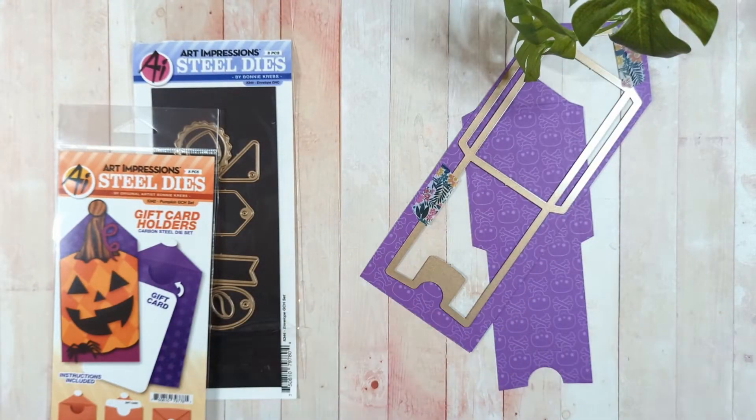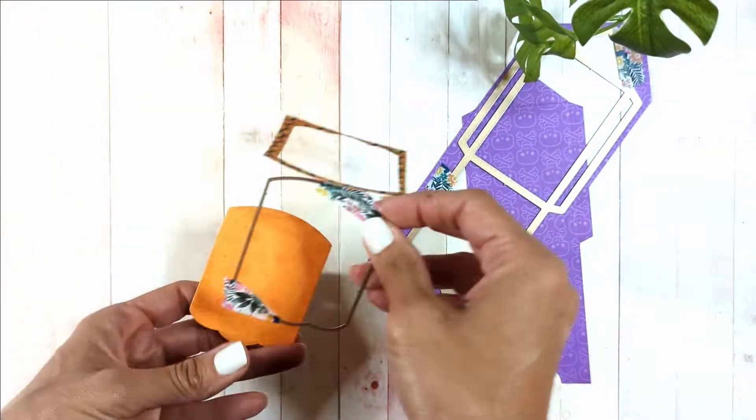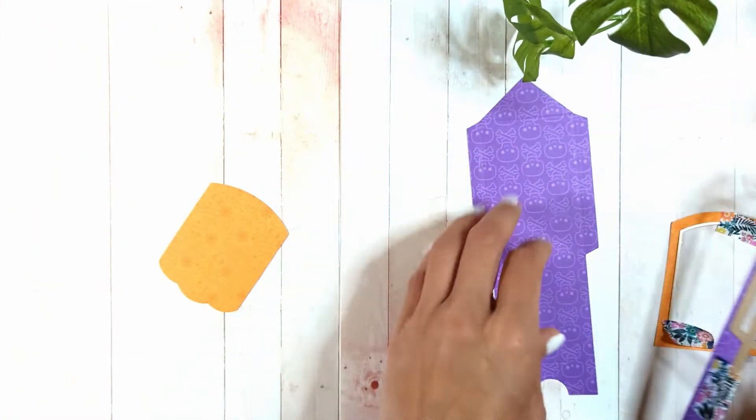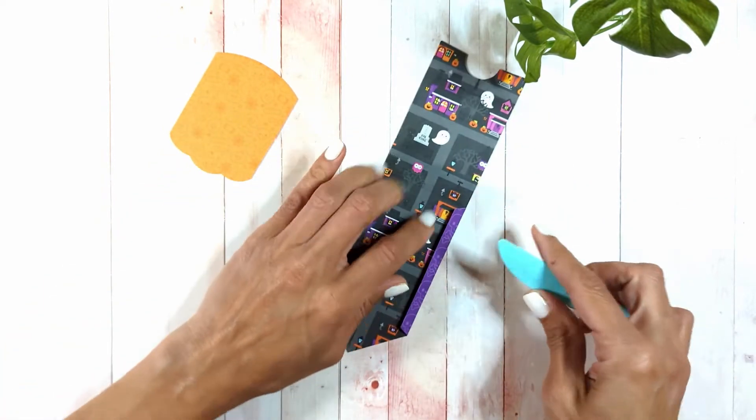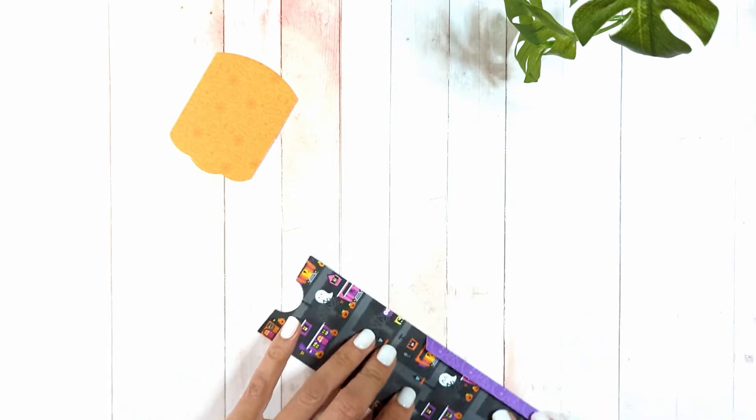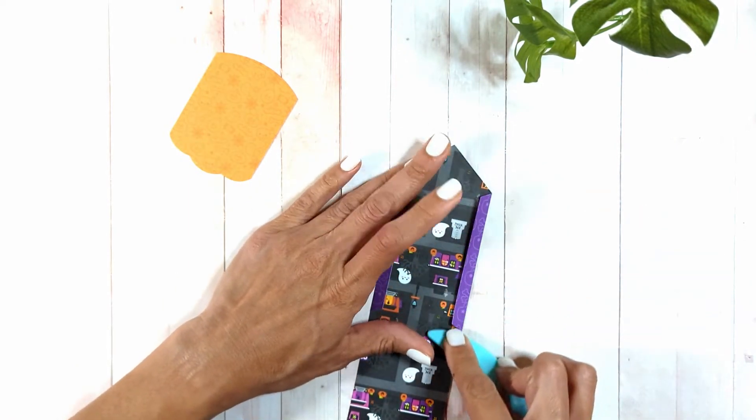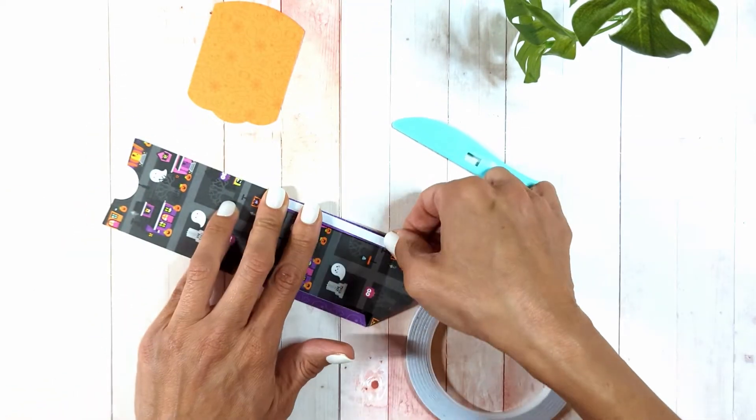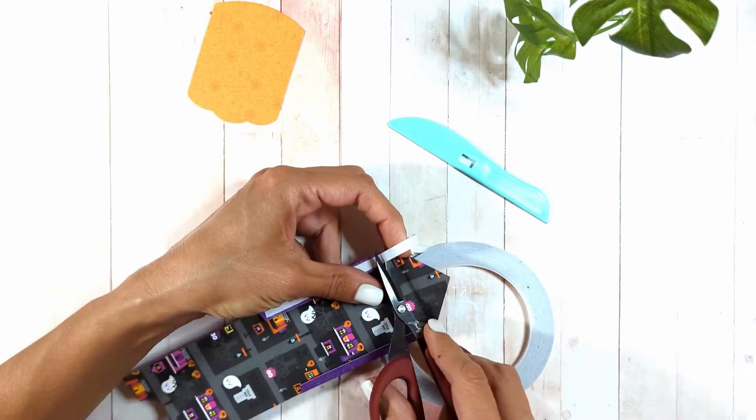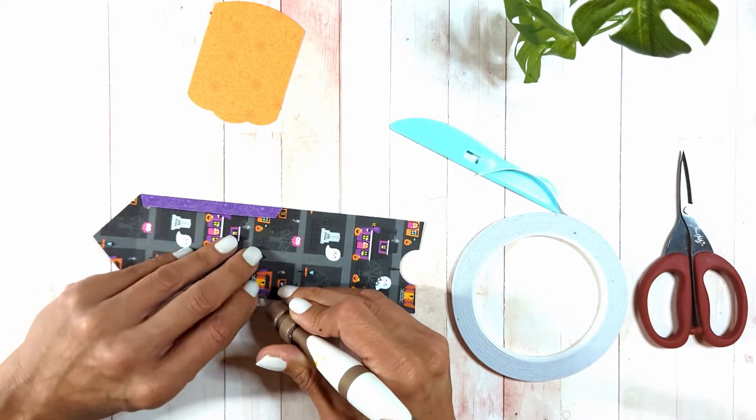I started with die cutting the gift card holder from a purple pattern paper from the Happy Haunting Paper Collection. I'm going to fold the flaps that are scored by the die and add double-sided tape. I'm creating the envelope first, then I'll create a pocket for it and a greeting card to add the pocket in. I'm removing the release paper and closing the envelope. It's a very easy envelope to create.